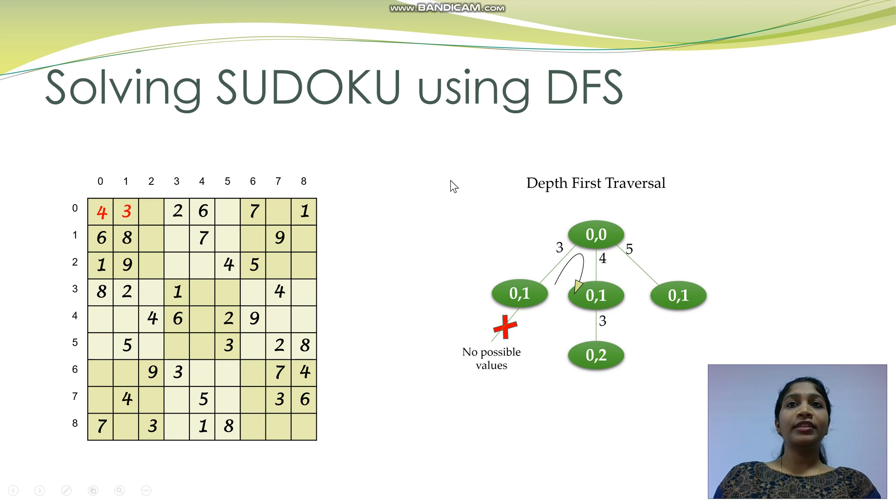Continue in the similar fashion. That is, when there are more than one branch, choose the first branch. Continue until you are stuck with no possible values.